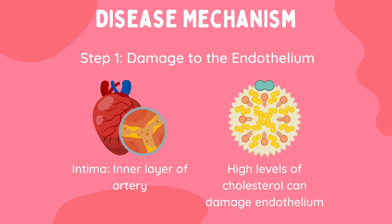Let's take a look at the mechanism of the disease by using a diagram to understand how it progresses over time. Atherosclerosis begins with damage occurring to the inner layer of the artery wall. This layer is called the intima, and it is lined with endothelial cells forming the endothelium. The endothelium serves as a barrier between the blood and the artery wall.